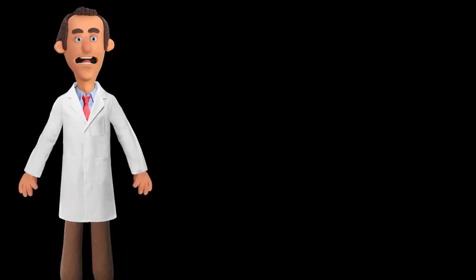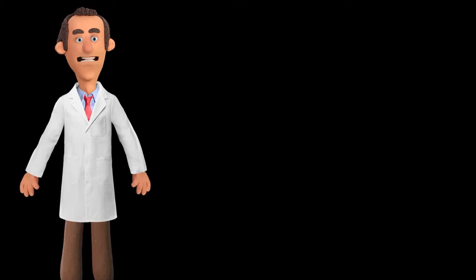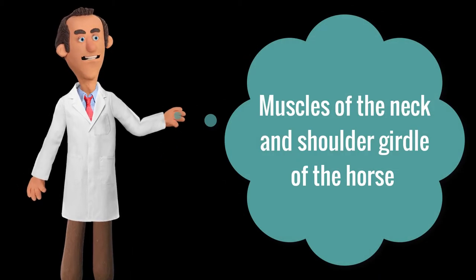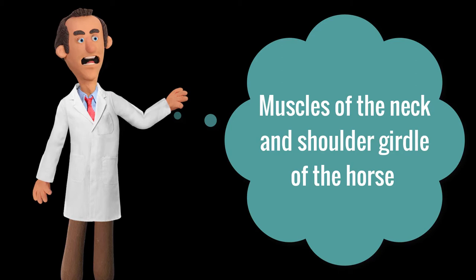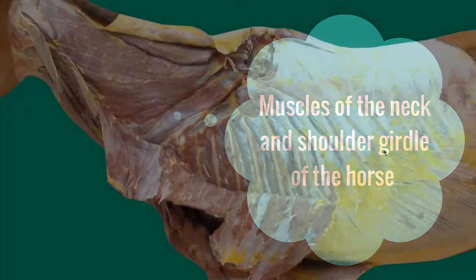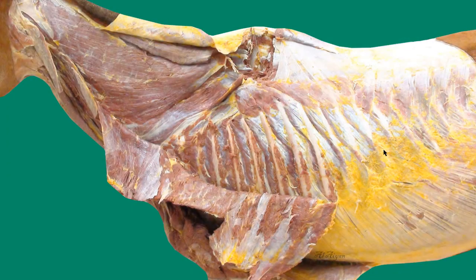Hello everyone and welcome back to another anatomy tutorial. In this tutorial we will continue talking about the muscles of the neck and the shoulder girdle. We removed the forearm completely so we can see the deep muscles of the neck and the deep muscles of the shoulder girdle. Let's go through the muscles we are going to dissect before moving to the dissection. In this view we have removed the left forearm completely.